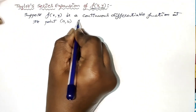Here f_x is nothing but the partial differentiation of f with respect to x at the point (a, b), plus (y minus b) into the partial differentiation of f with respect to y at the point (a, b), plus 1 by 2 factorial into (x minus a) whole square into f_xx at (a, b).